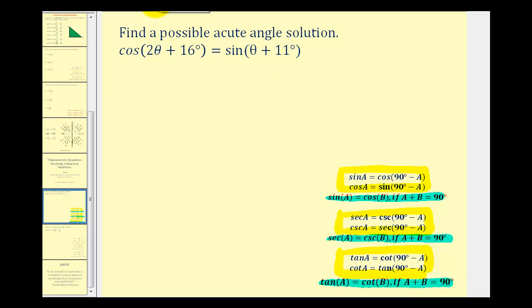So the first thing to recognize here is that we have an equation where we have cosine of a quantity equals sine of a quantity. Therefore, these angles must be complementary or have a sum of 90 degrees.